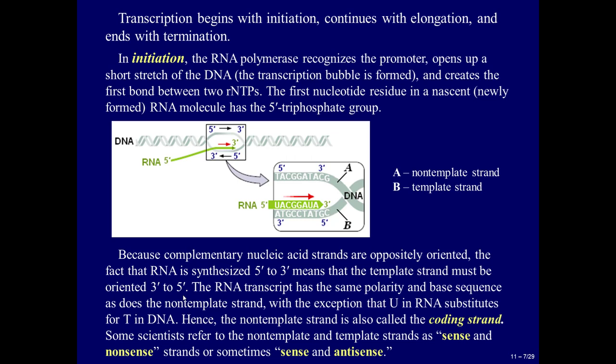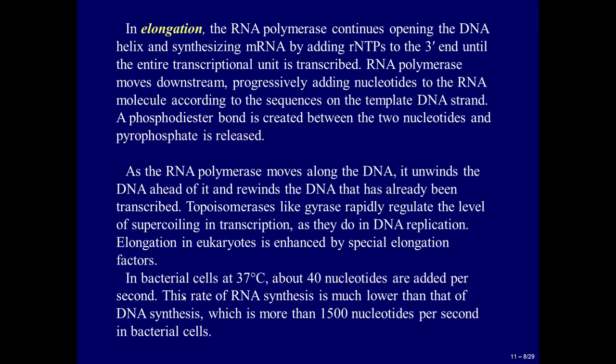Because complementary nucleic acid strands are oppositely oriented, the fact that RNA is synthesized 5' to 3' means that the template strand must be oriented 3' to 5'. The RNA transcript has the same polarity and base sequence as the non-template strand, with the exception that U in RNA substitutes for T in DNA. Hence, the non-template strand is also called the coding strand. Some scientists refer to the non-template and template strands as sense and antisense strands. In elongation, the RNA polymerase continues opening the DNA helix and synthesizing mRNA by adding RNTPs to the 3' end until the entire transcriptional unit is transcribed.